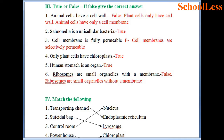Question 3: True or false — if false, give the correct answer. Statement 1: Animal cells have a cell wall. We have seen in the lesson that animal cells do not possess a cell wall. Therefore it is a false statement. Only plant cells have a cell wall; animal cells have only a cell membrane.